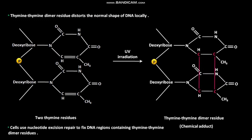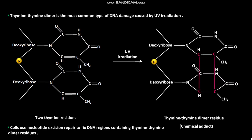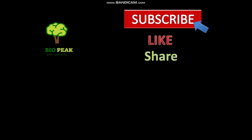Cells use nucleotide excision repair to fix DNA regions containing thiamine thiamine dimer residues. Thiamine thiamine dimers interfere with both replication and transcription of DNA. Thiamine thiamine dimer is the most common type of DNA damage caused by UV irradiation.